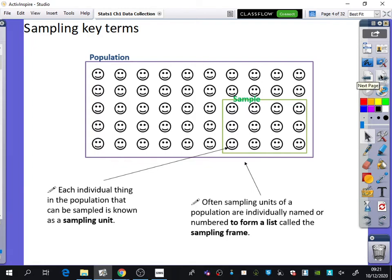Some key terms about sampling: Each individual thing in the population that can be sampled is known as a sampling unit. This is something you need to know—a sampling unit is each individual thing within the population.